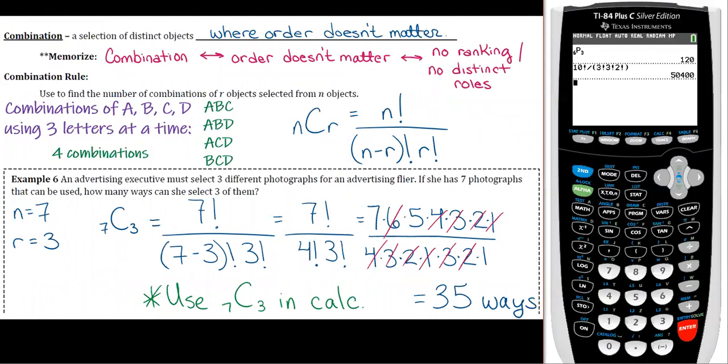Okay, this one for the combination rule, so you can just go to NCR in your calculator. So you would go to math, probability, third one down, NCR for combinations, and then you would fill in the 7, fill in the 3, and you get 35 as your answer there.